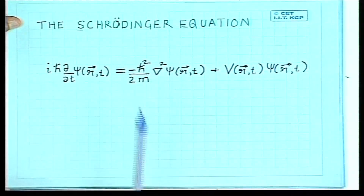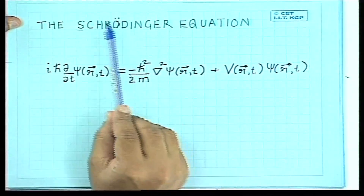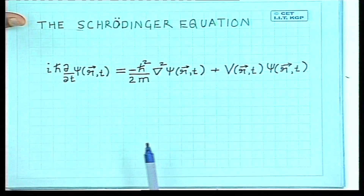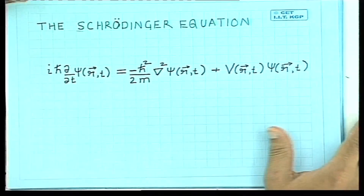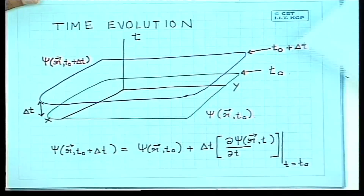In the last class, we had started discussing a particle moving in a potential. The wave function for such a particle is governed by the Schrödinger equation. The Schrödinger equation governs the time evolution of the wave function.